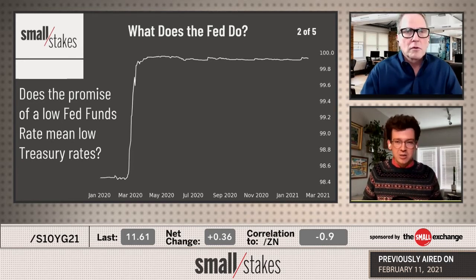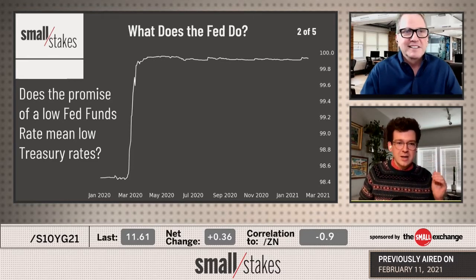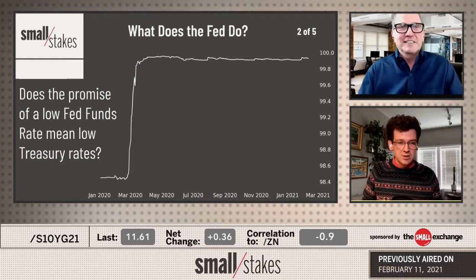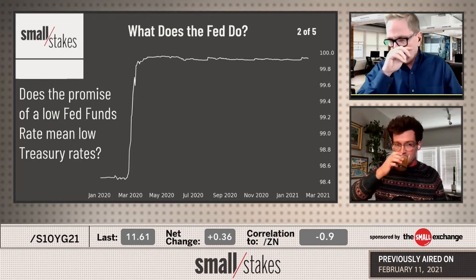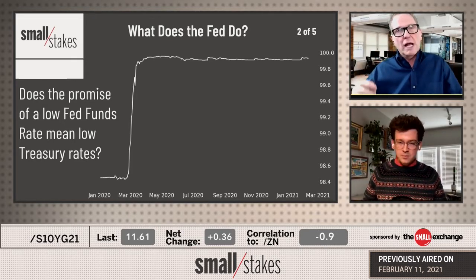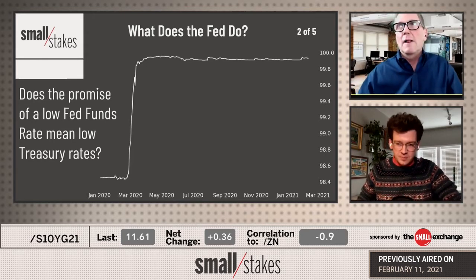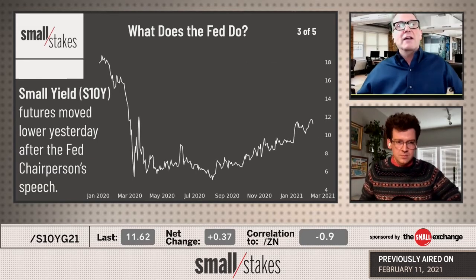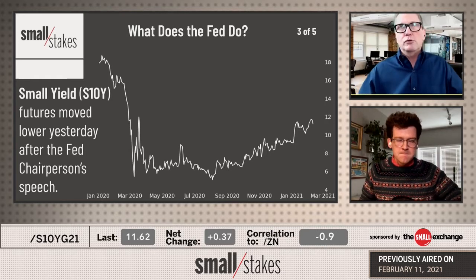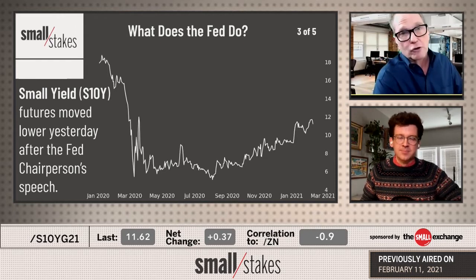When trading S10Y — the 10-year treasury yield — or the two-year and 30-year coming out from the Small Exchange, those are treasury yields. The Fed is not setting those treasury yields, and they can't. No one can. That is a market driven by supply and demand: the amount of treasuries the U.S. government needs to sell to fund its business, and the demand from purchasers for an asset that yields a rate of return. That rate of return is whatever the market determines it to be.